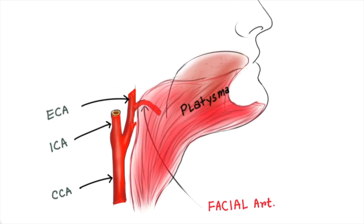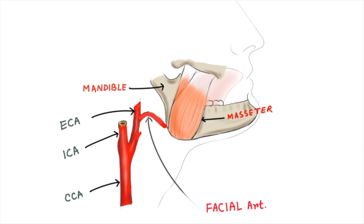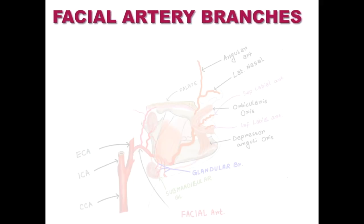Here is the mandible and the masseter muscle. The facial artery passes deep to the stylohyoid and posterior belly of the digastric muscle, and emerges over the edge of the mandible at the antero-inferior portion of the masseter muscle, where you can feel the pulse.